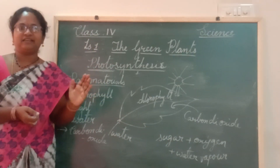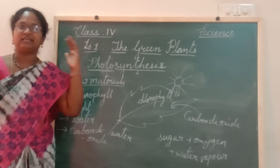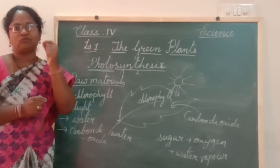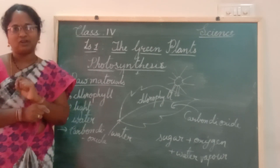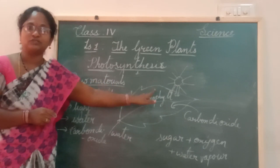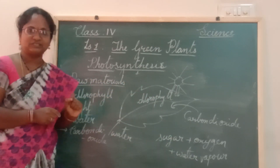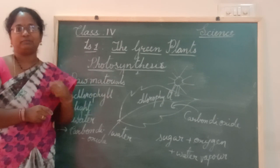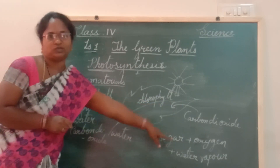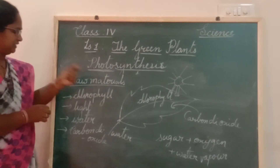On a warm sunny day, whenever we go under a big tree, sometimes we feel water droplets falling on us. Why? Because the plant is performing the photosynthesis process, and water droplets will be falling down — because it gives out water vapour as well.